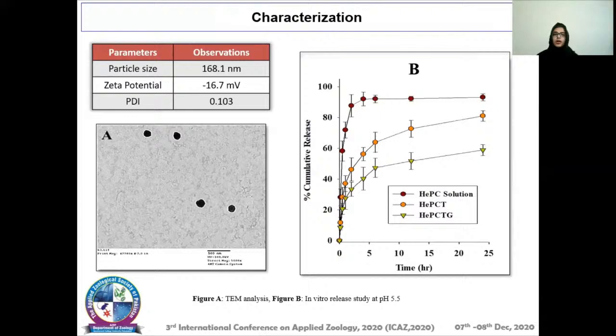In vitro release study was performed at pH 5.5, and almost 90% of the drug is released within four hours. In the case of HEPC-TG, which is our formulation, the drug is released in a sustained manner, and the overall pattern of release follows Korsmeyer-Peppas diffusion.